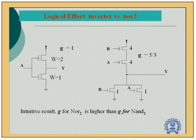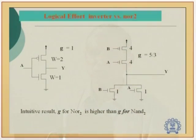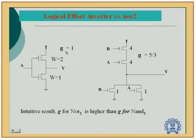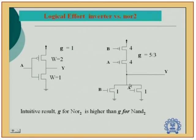For logical effort calculations, assume P-channel width is twice N-channel width (mobility ratio = 2). The logical effort of an inverter is unity — it is our template. For a 2-input NOR gate: N-channel transistors are in parallel so they stay at size 1 each; P-channel transistors are in series so must be doubled from 2 to 4 each to maintain equivalent resistance. This is because two P-channels in series with width 4 each give equivalent resistance of a single P-channel of width 2.